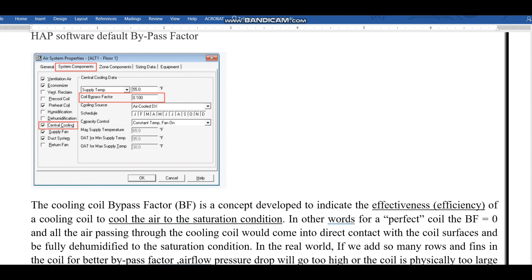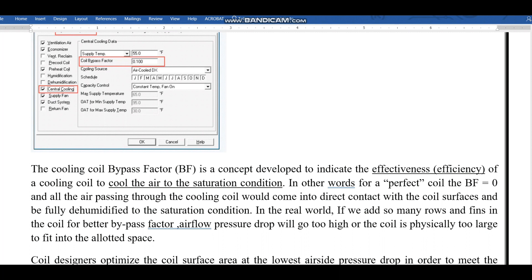The cooling coil bypass factor is a concept developed to indicate the efficiency or effectiveness of your cooling coil to cool the air to saturation condition. In other words, for a perfect coil, bypass factor would be zero, but it's not practically possible because all the air passing through would come into direct contact with the coil surfaces and be fully dehumidified to saturation condition. This is not possible in the real world.